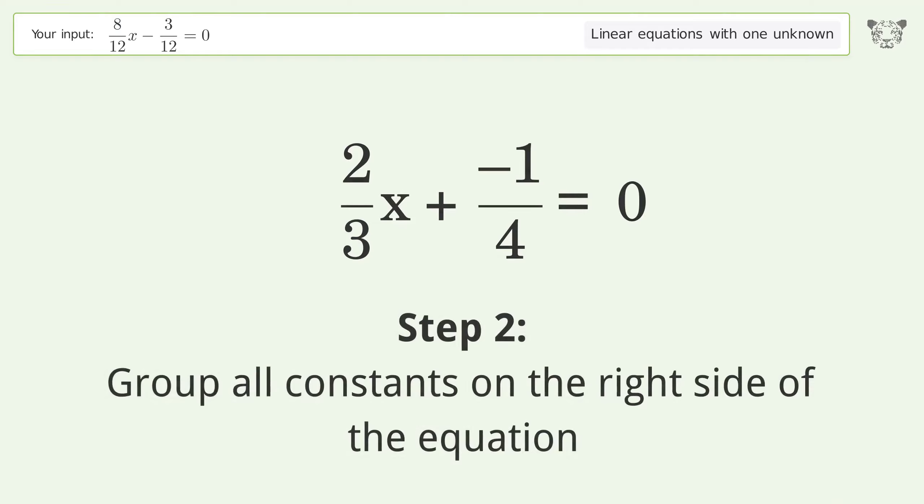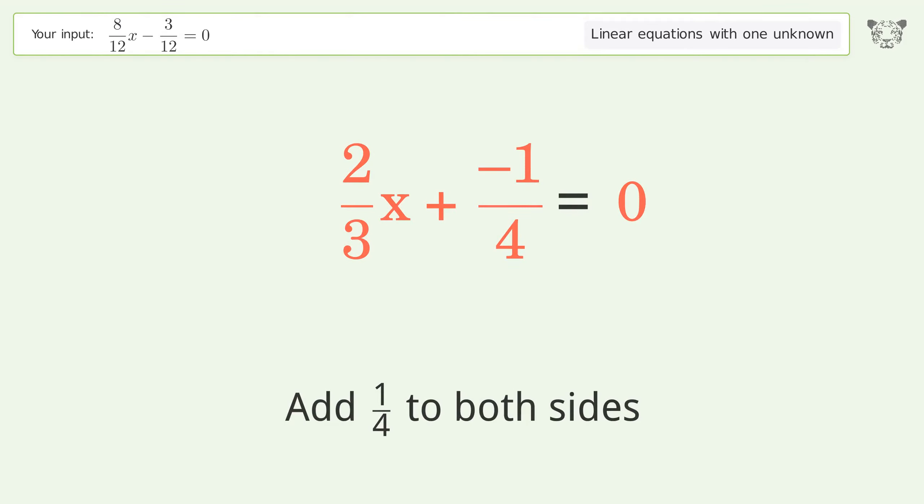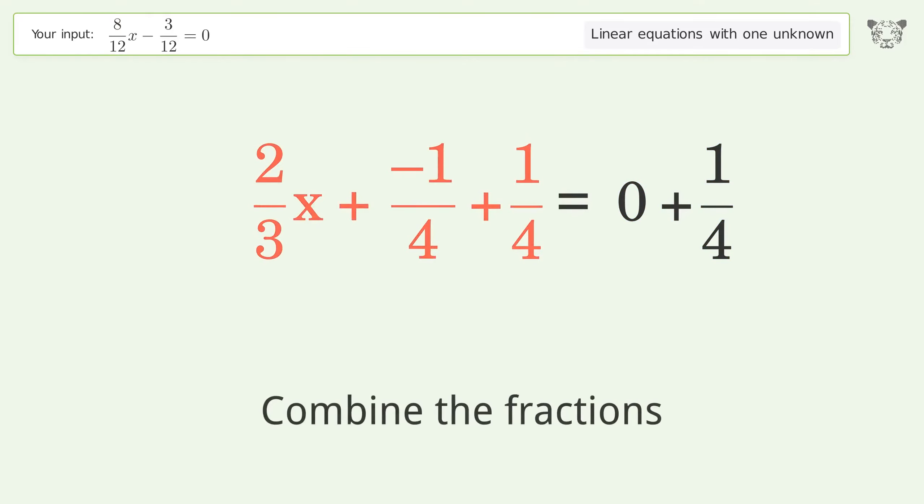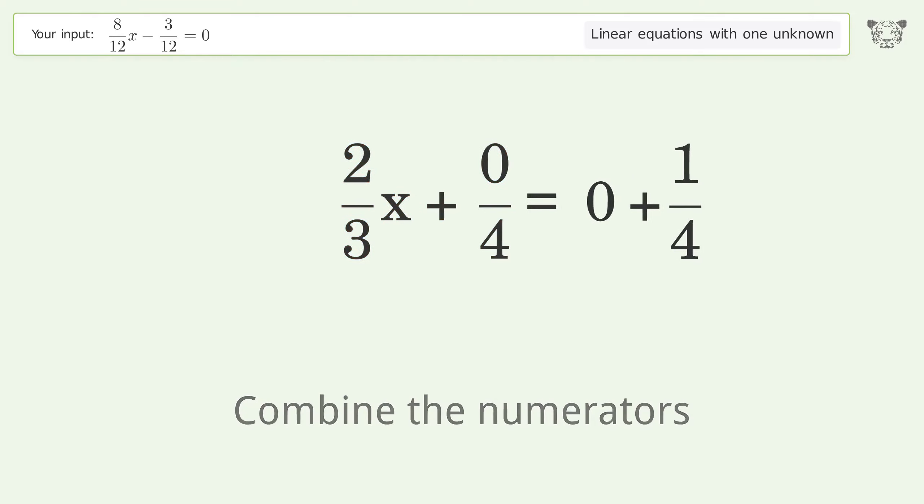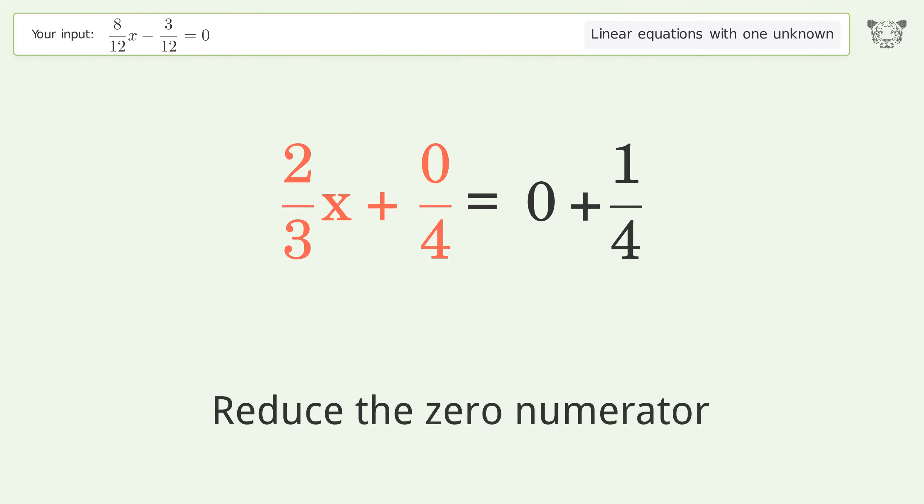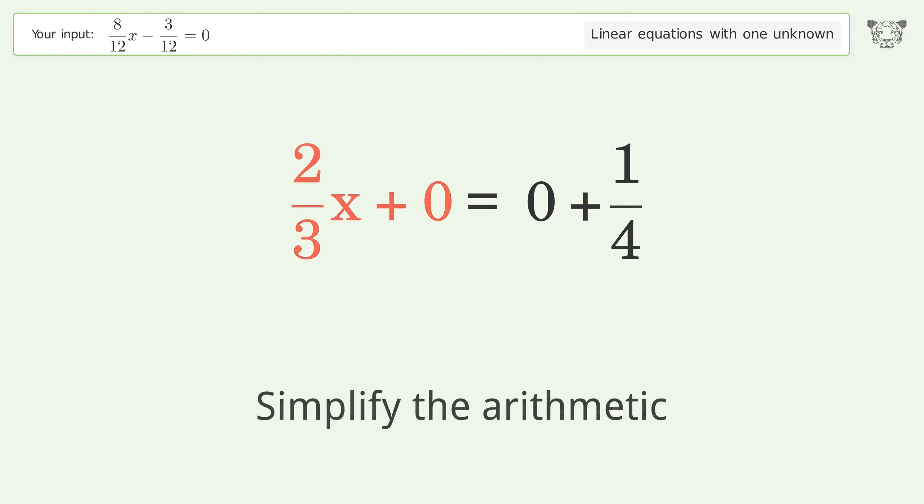Group all constants on the right side of the equation. Add 1 over 4 to both sides. Combine the fractions. Combine the numerators. Reduce the zero numerator. Simplify the arithmetic.